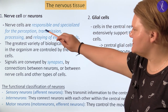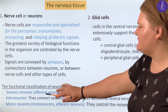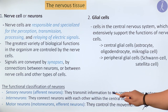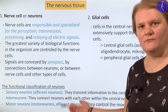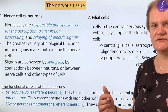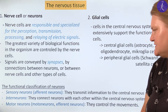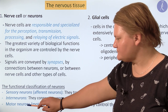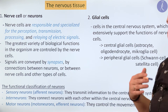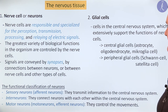Firstly, I would like to talk about the neurons. Neurons, or nerve cells, are responsible and specialized for the perception, transmission, processing, and relaying of electrical signals through synapses. Based on function, we can classify them: sensory neurons transmit information into the central nervous system from the periphery; interneurons act as mediator cells between two neurons within the central nervous system; and motor neurons innervate effectors and have a role in the control of movement.